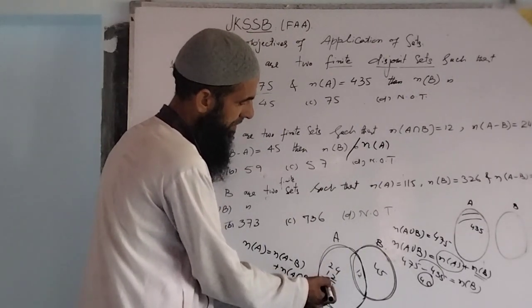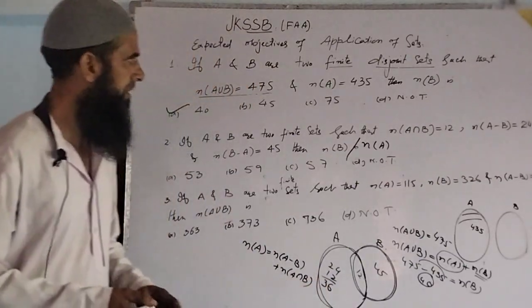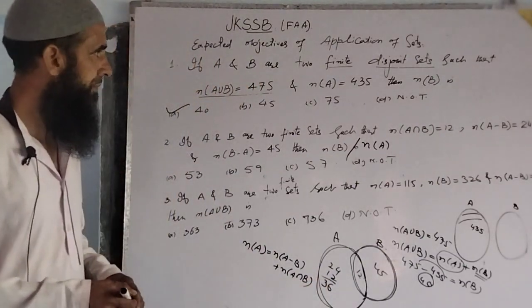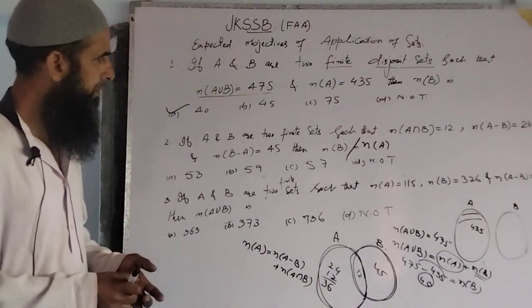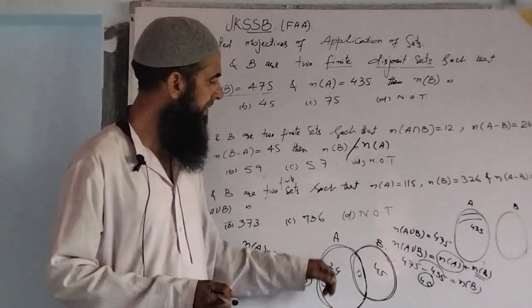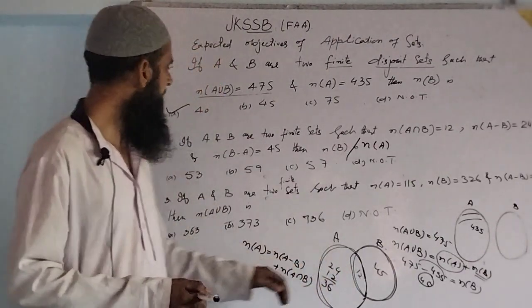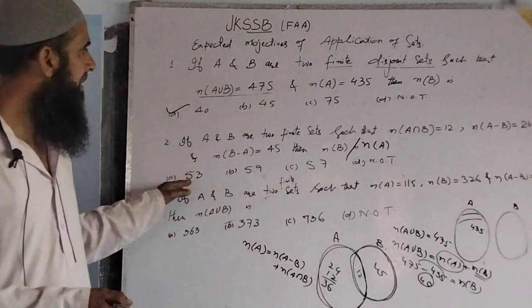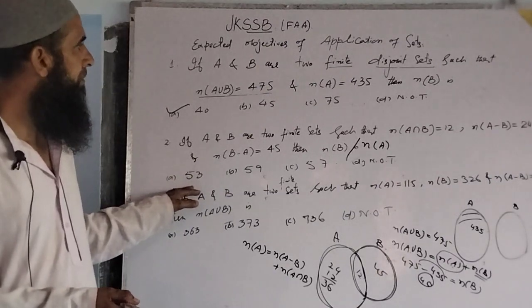The sum of those two is 24 plus 12 equals 36. Dear students, we have here number of elements in A set equals 36.